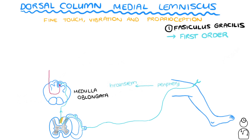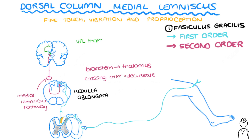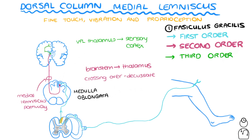Another nerve continues the pathway by crossing over to the other side — this crossing over is known as decussation. The bundle of nerves travelling in this pathway is now known as the medial lemniscus. This nerve will travel up to get to the thalamus in the brain, where it synapses in the ventral posterolateral, or VPL, nucleus of the thalamus. Since this nerve took information from the brainstem to the brain, it's a second-order neuron. The final nerve goes from the VPL to the leg part of the somatosensory cortex, which is found medially — this nerve is the third-order neuron.